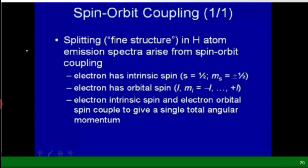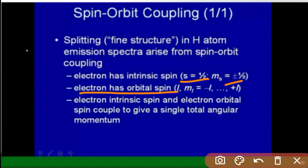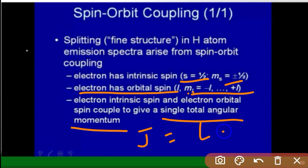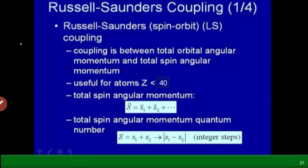Spin-orbit coupling splitting, that is fine structure in the hydrogen atom emission spectrum, arises from spin-orbit coupling. The electron's intrinsic spin is S = 1/2 and Ms = ±1/2. The electron's intrinsic spin and orbital angular momentum couple to give a single total angular momentum J = L + S. Russell-Saunders LS coupling describes the coupling between total angular momenta, and this scheme is useful for atoms with atomic number Z less than 40.